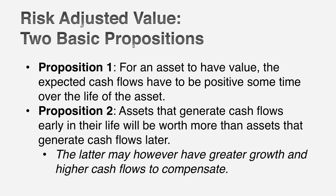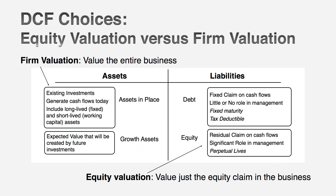Here's the first one: for an asset to have value, its expected cash flows have to be positive at some point in time. If you come to me with a company that's losing money and expected to lose money forever, that company is worth nothing. For a company to have value, its cash flows have to be positive at some point in time. If you have a business with negative cash flows up front, it doesn't have to be a bad business — it could be a young startup. For that business to have value, it has to have disproportionately large positive cash flows in the future. If you lose a billion dollars in year one, you better make five or ten billion in year ten to make up for it.